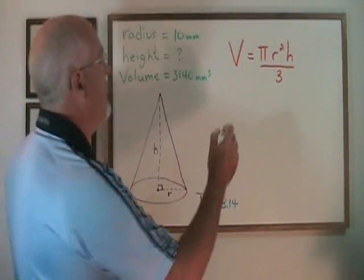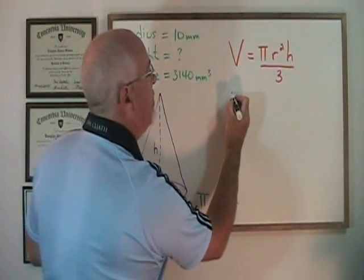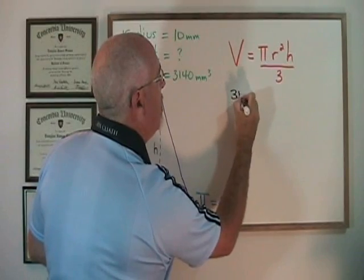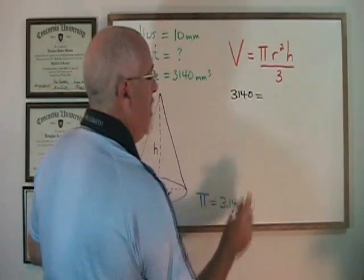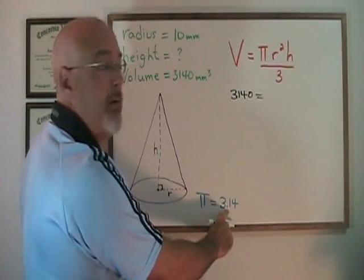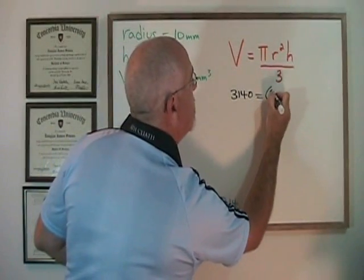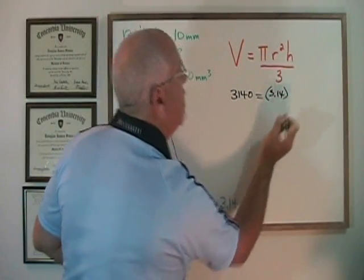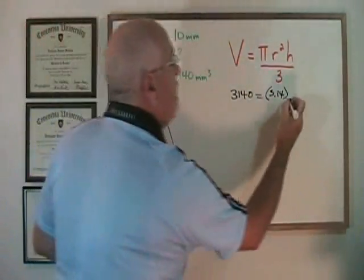Filling in the formula, the 3140 goes in the position of the v. 3.14 is our approximation of pi. It goes in the position of the pi symbol. The r is the 10.